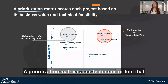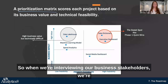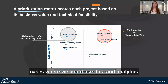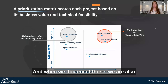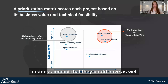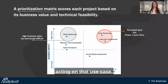A prioritization matrix is one technique or tool that you can use to help build out a roadmap. When we're interviewing our business stakeholders, we're listening for all those wonderful opportunities — use cases where we could use data and analytics to make a difference in the business. And when we document those, we are also documenting them with an understanding of the potential business impact they could have, as well as the technical feasibility involved with implementing or acting on that use case.